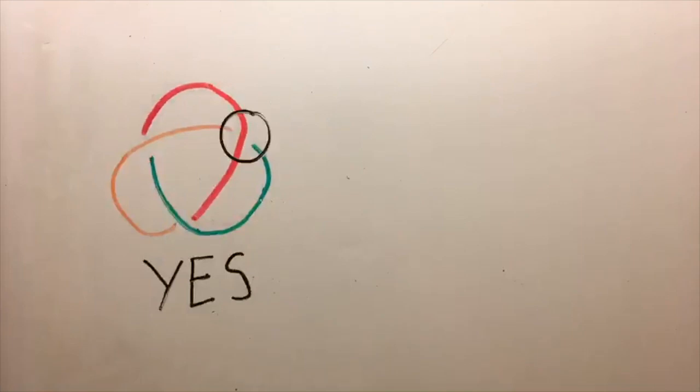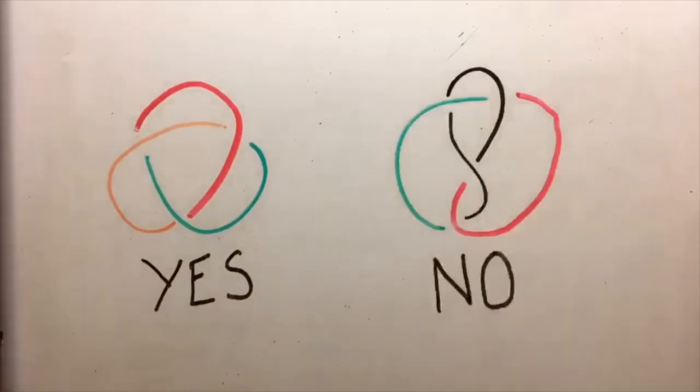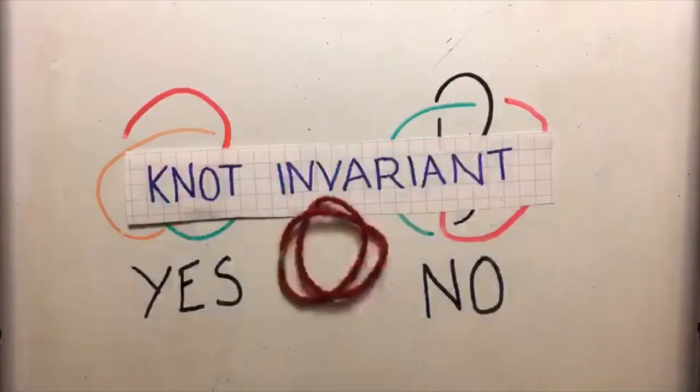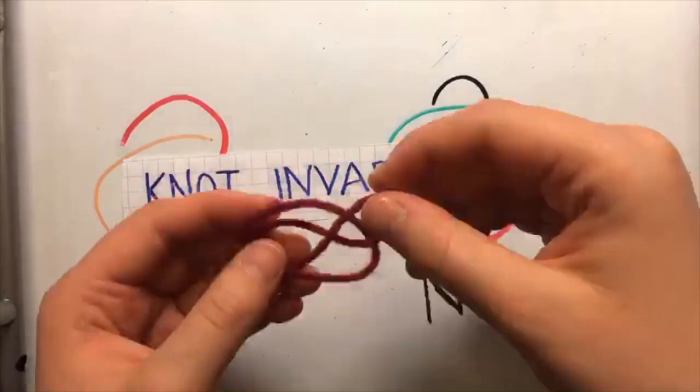So this knot is tricolorable, because all three crossings are legal. But this knot is not tricolorable, because these two crossings are not legal. So is tricolorability a knot invariant? Is it a characteristic that never changes in a given knot?